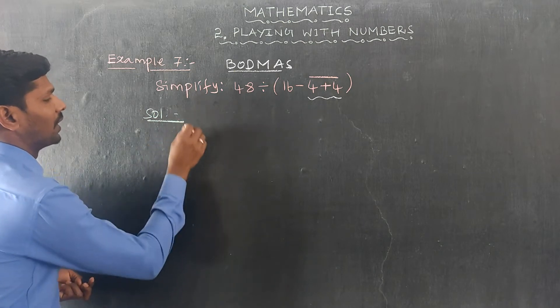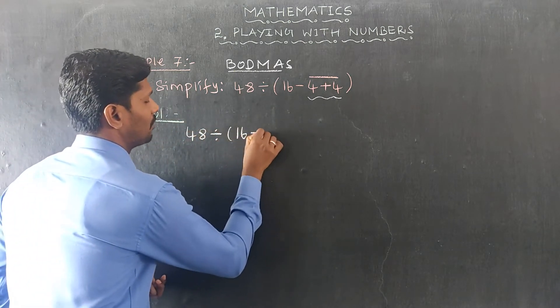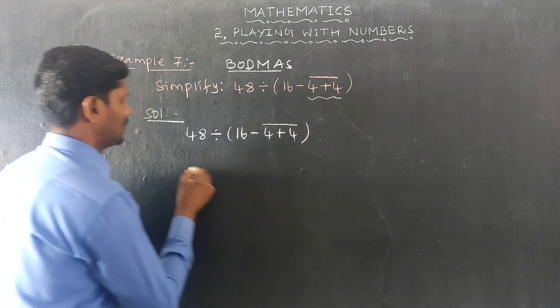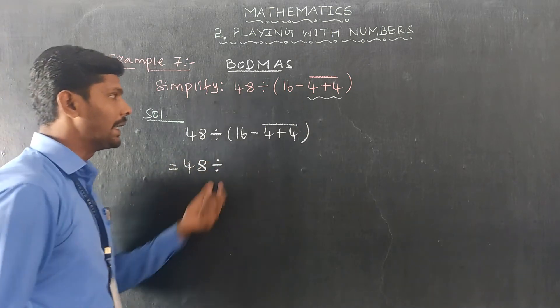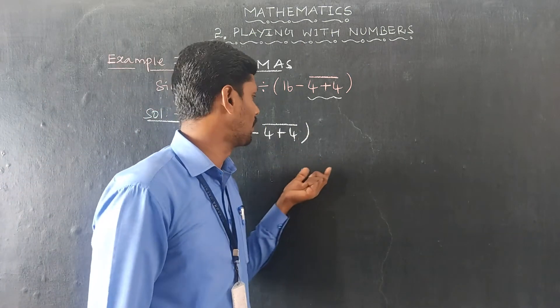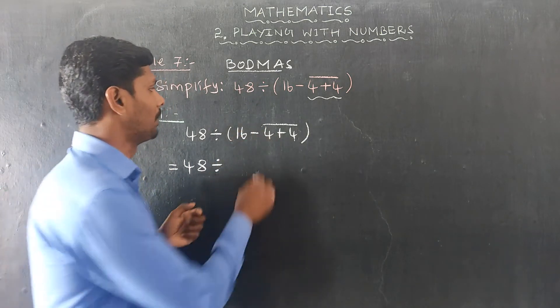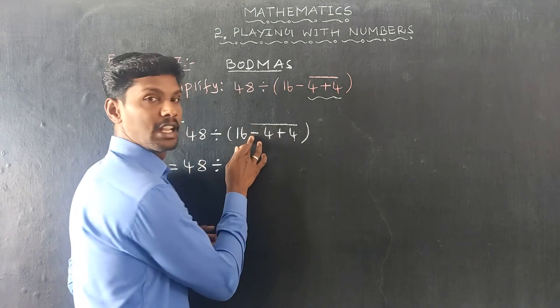The first one is given: 48 divided by 16 minus 4 plus 4 in line bracket. So equal to 48 divided by innermost bracket. This is the first one we can solve, innermost bracket is line bracket. So in the line bracket, 4 plus 4.